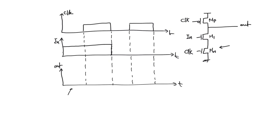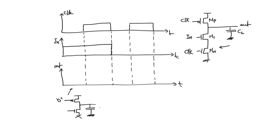When the clock is zero, the PMOS transistor MP is on and the NMOS transistor MN is off. The output node has a load capacitance CL — at minimum there will be parasitic capacitance. Note that MP and MN can never be on simultaneously because they are fed the same clock signal. With MN off, the path to ground is cut off, so it doesn't matter whether M1 is on or off.